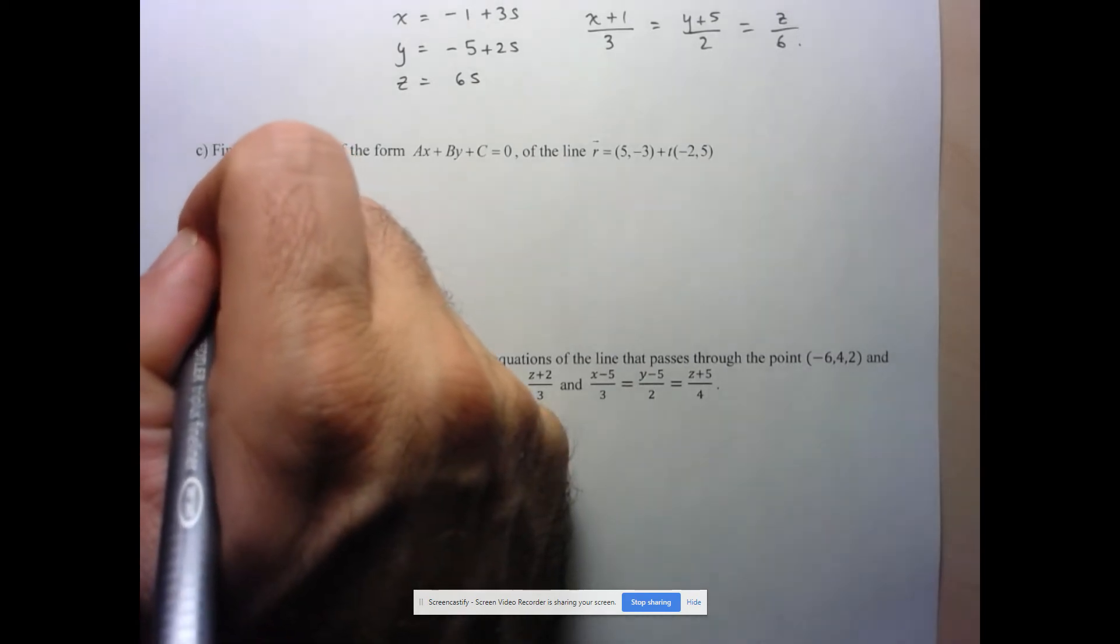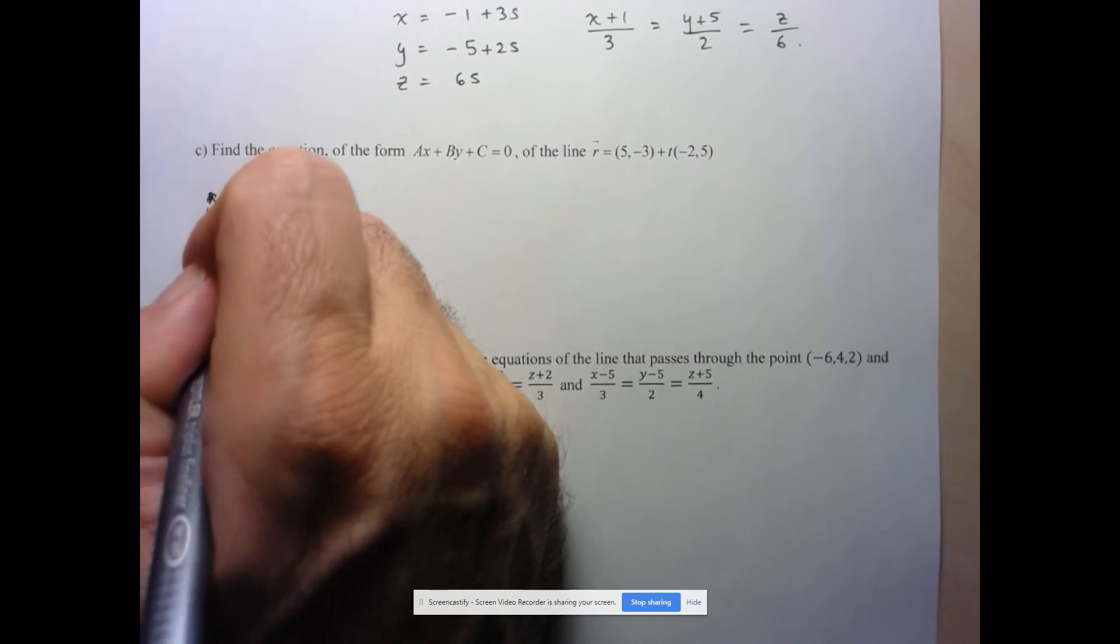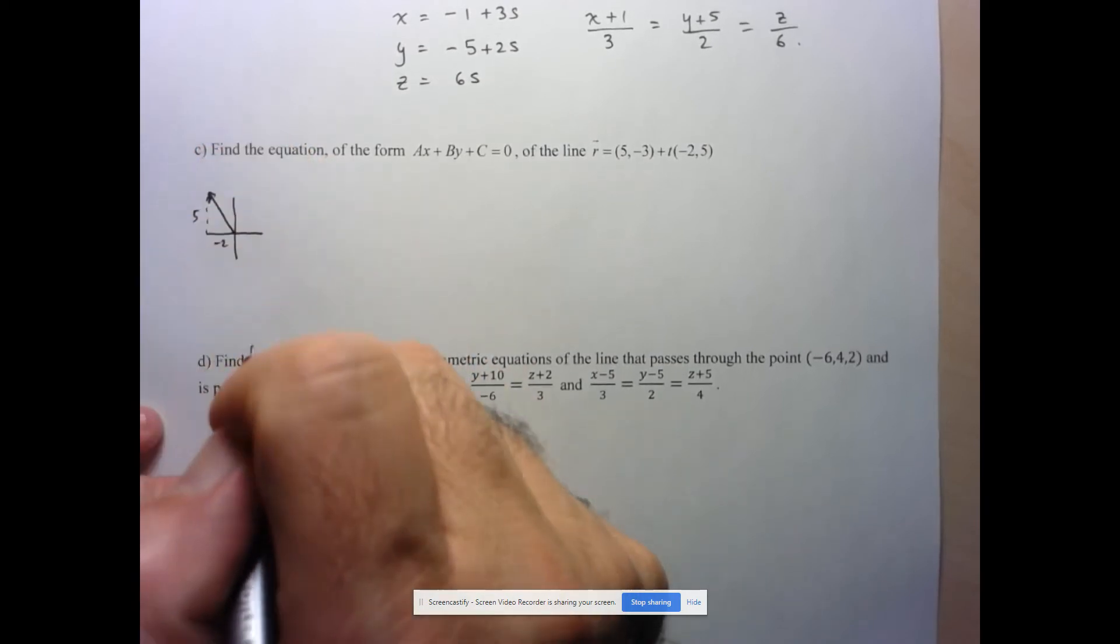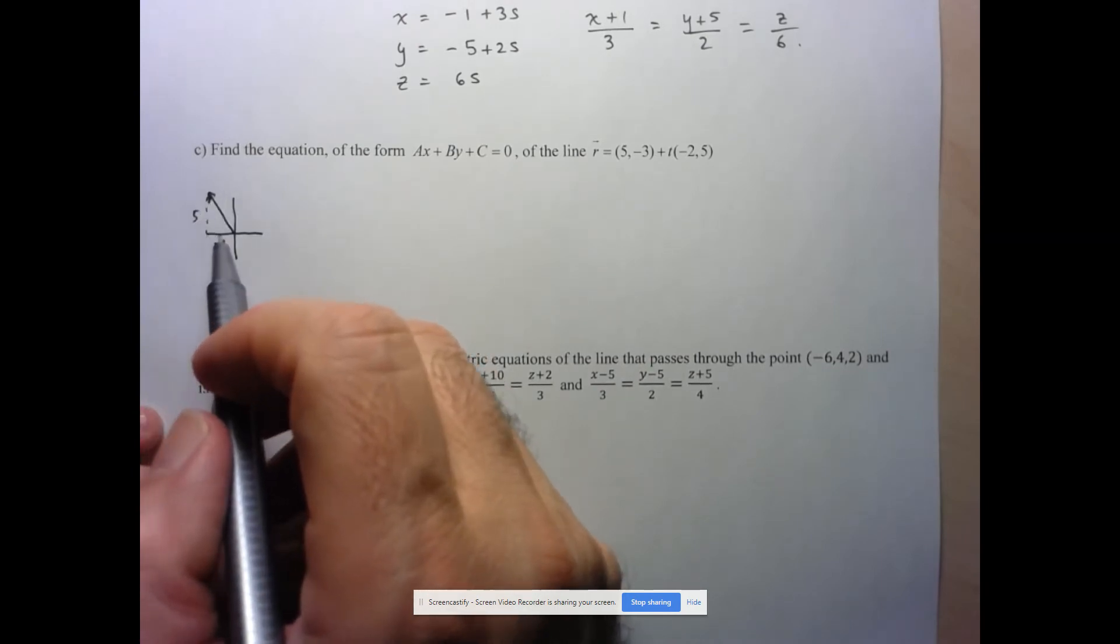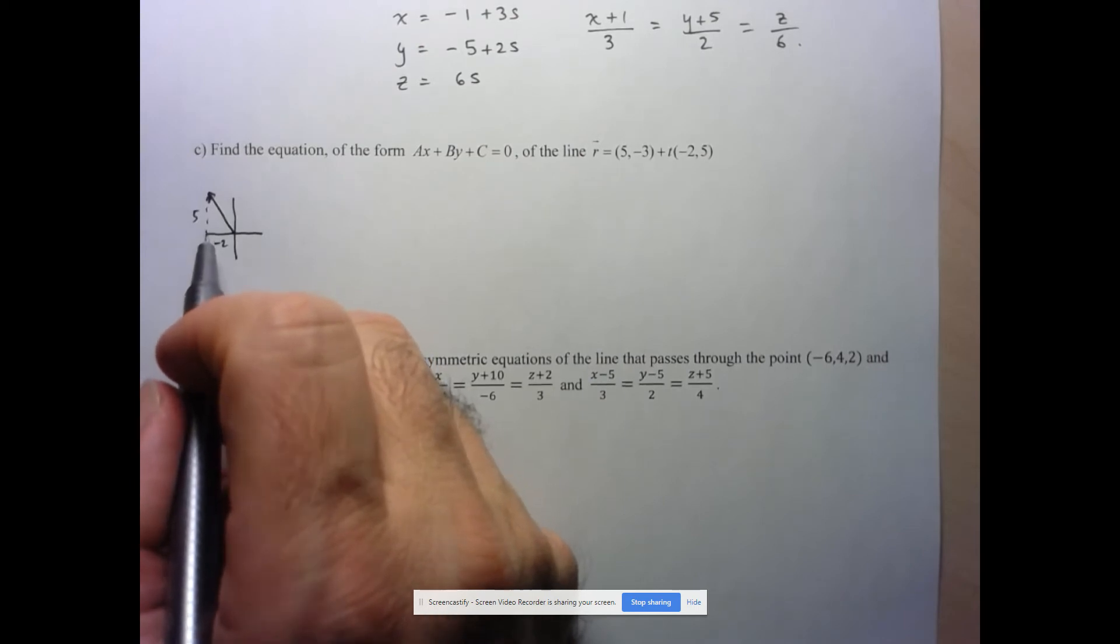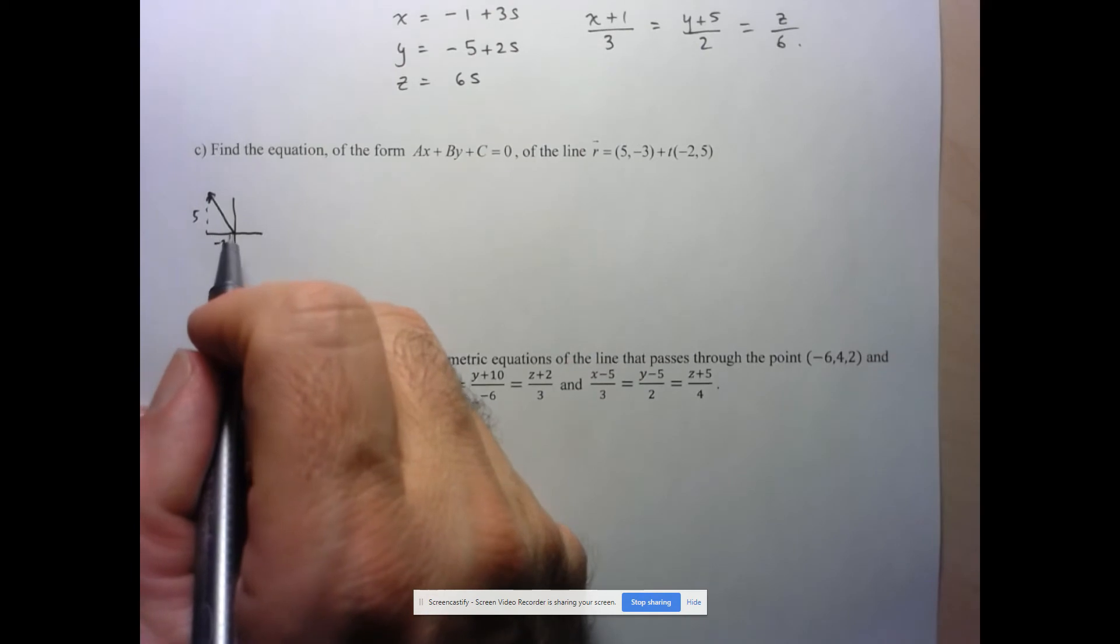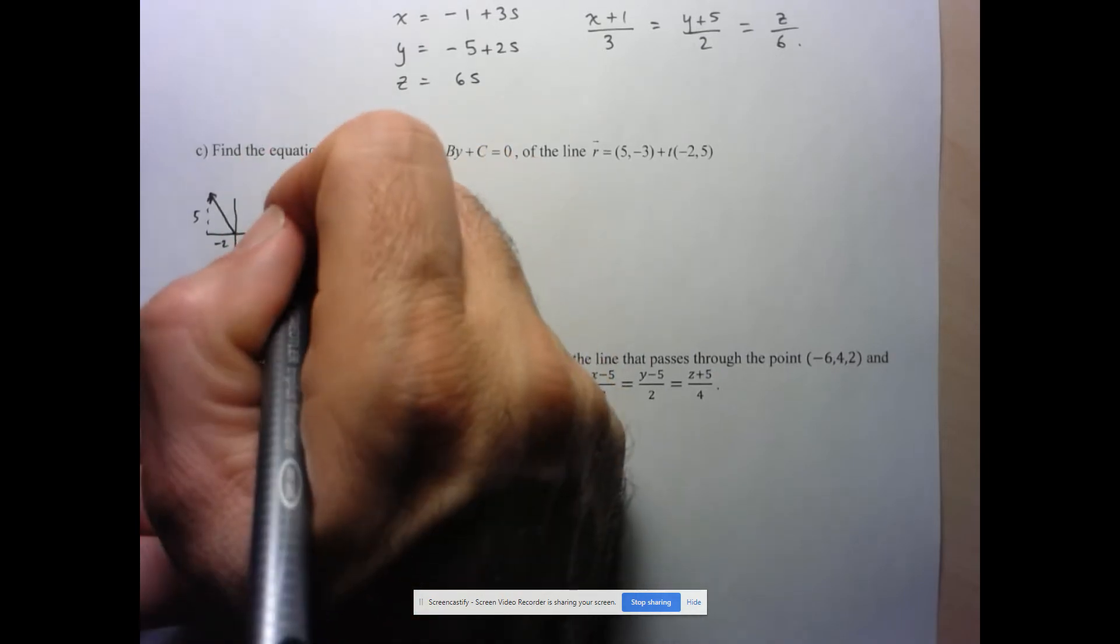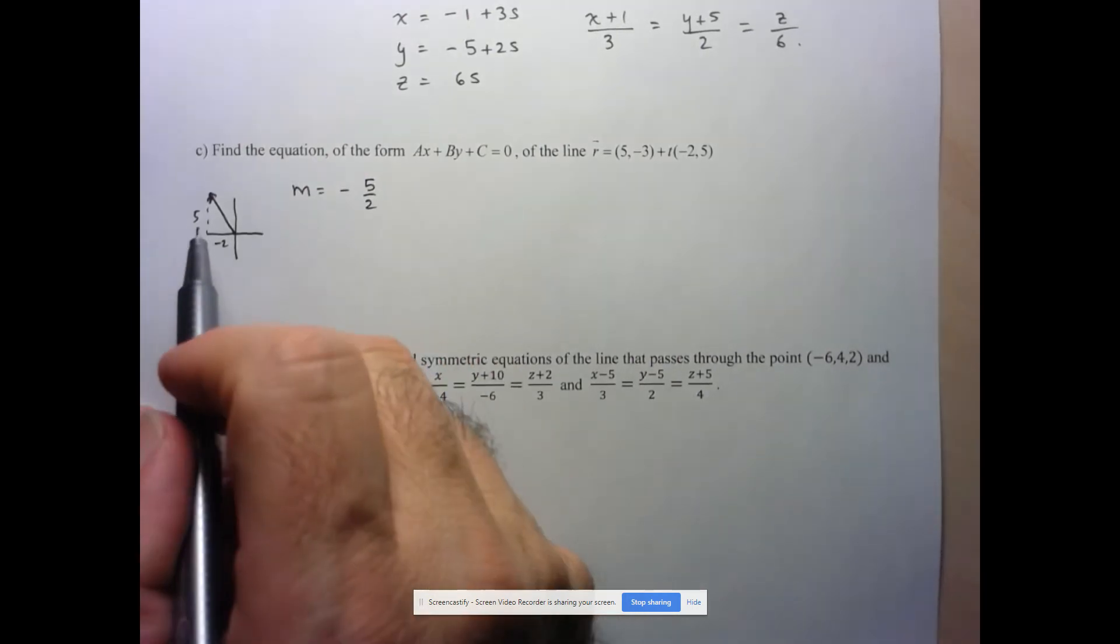So direction vector looks something like this, and we've got negative 2, and we've got 5. So think about how we calculate the slope is the change in Y over the change in S. So as S, sorry, X, I guess I was thinking about the S up here. So as X goes up by 2, Y goes down by 5. So in other words, my slope is just going to be equal to negative 5 over 2.